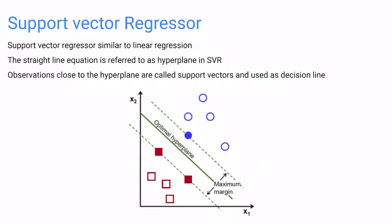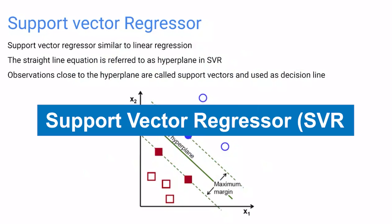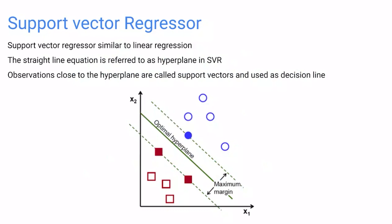Today we're going to talk about another regression algorithm called Support Vector Regressor. It's similar to the linear regression algorithm we talked about before in terms of predicting a continuous value. The straight line equation is referred to in support vector regression as a hyperplane.